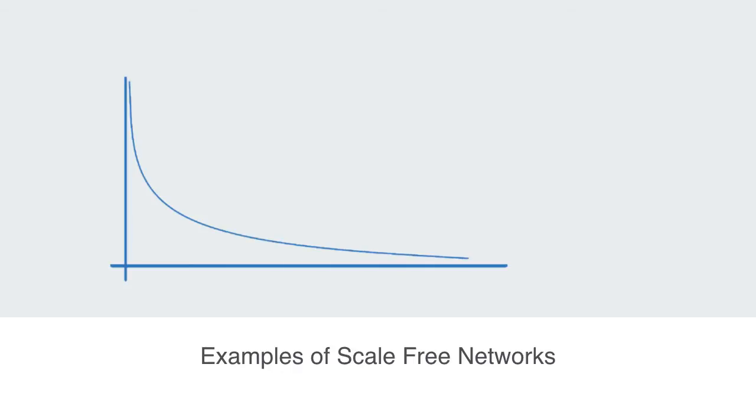This type of power law graph was first discovered within the degree distribution of websites on the internet, with some websites like Google and Yahoo having very many links into them, but there also being very many sites out there on the web that have very few links into them.